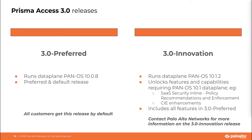The cloud service plugin 3.0 Preferred will run on the PanOS version 10.0 data plane, which is the same as the data plane running for the 2.2 Preferred release. Cloud service plugin 3.0 Innovation will run on the PanOS 10.0 data plane, which unlocks the latest features available in the 10.1 data plane, in addition to the new features that are part of Prisma Access.